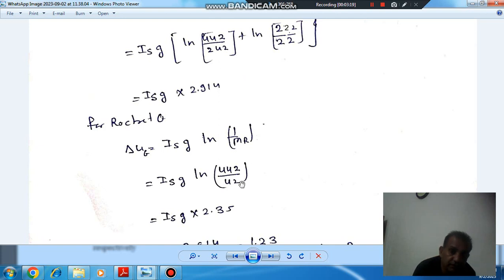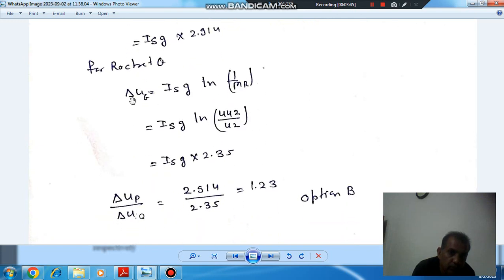The structure mass is 40 kg (20 here, 20 here equals 40, plus 2 kg payload equals 42). So the final mass after completion of the stage of Q is 42 kg. Since there is only single stage here, ΔUq = IsG × ln(442/42) = IsG × 2.35.